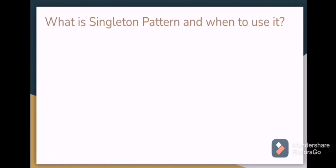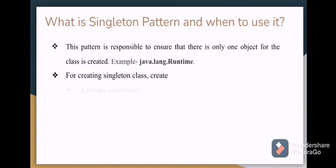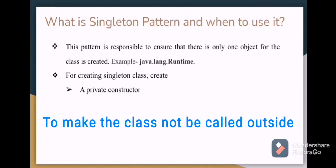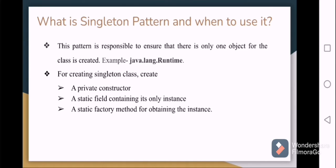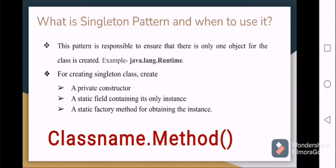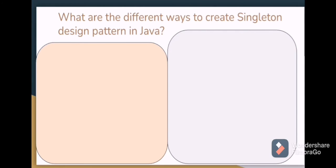The advantage of the abstract factory pattern is that it isolates client code from implementation classes and is mainly for exchanging object families. What is the singleton pattern and when to use it? The singleton pattern is the concept of having only one object for a class — for example, java.lang.Runtime. To create this pattern: create a class with one private constructor so the class cannot be instantiated outside, a static field containing the only instance, and a static factory method to get the instance. A real-time example is database connections — we connect to the database only once and use the same object for operations like insert, update, or delete.